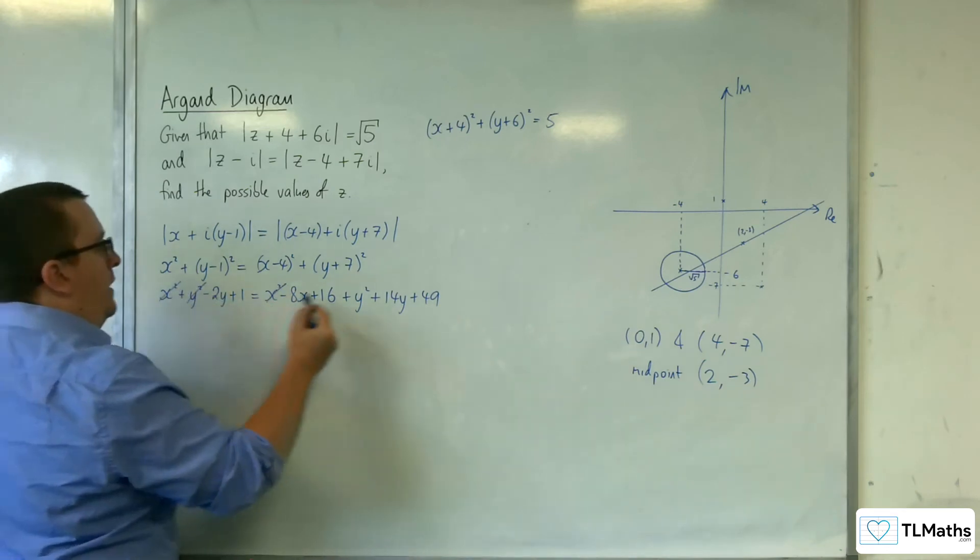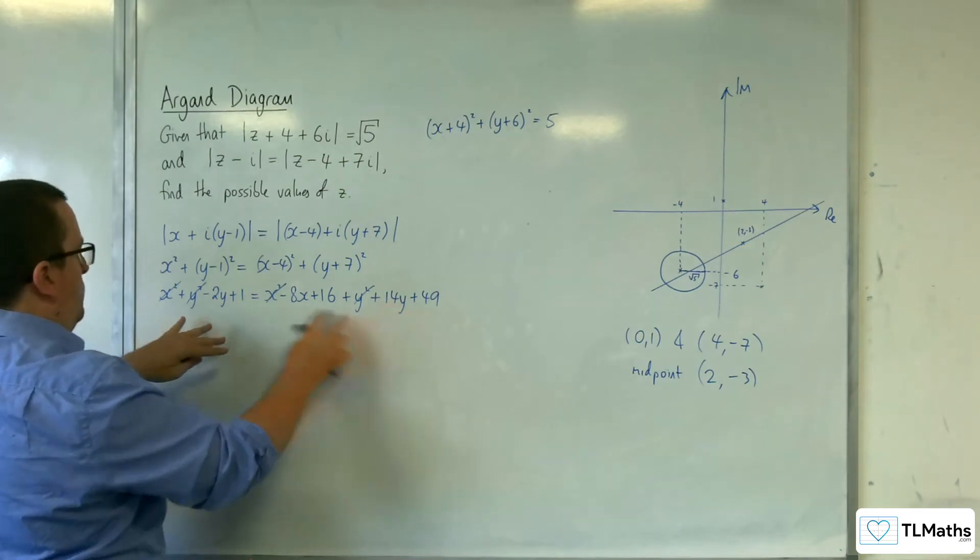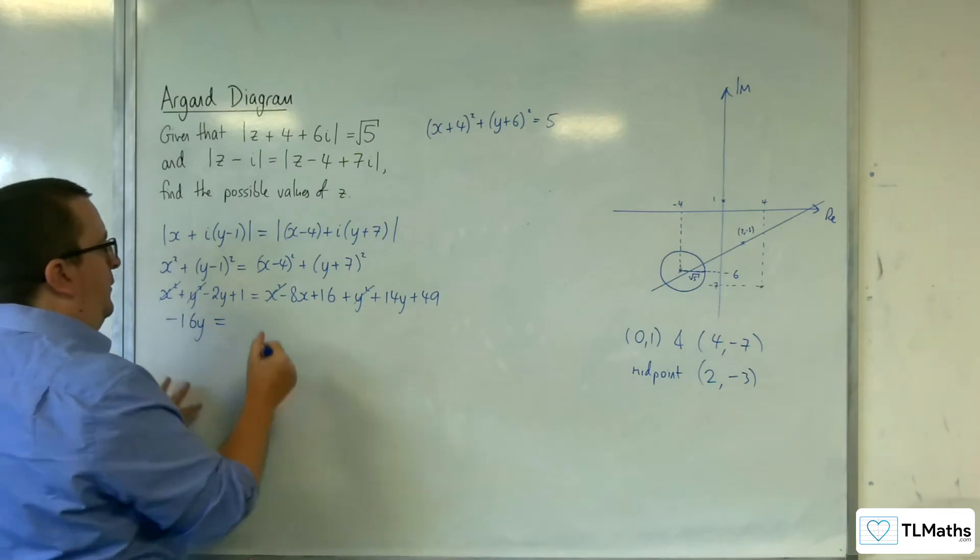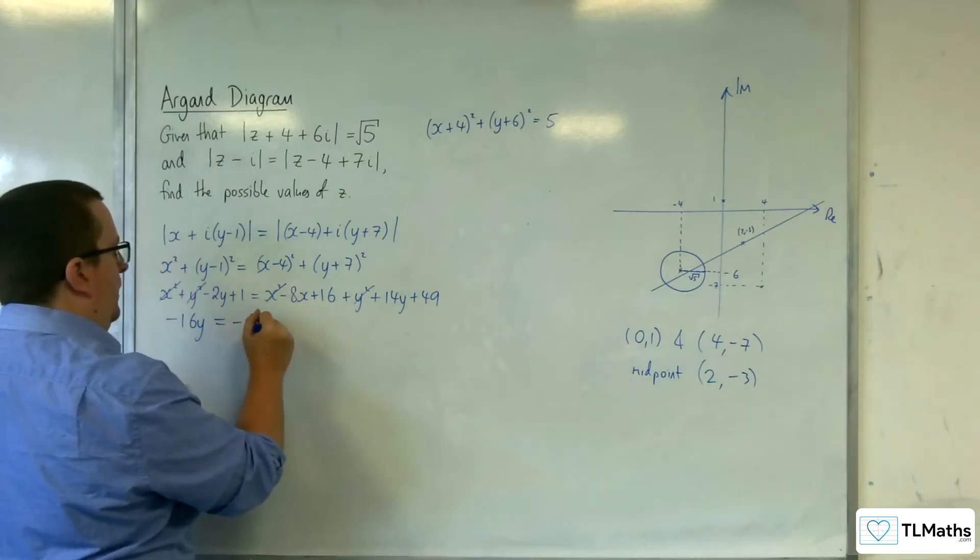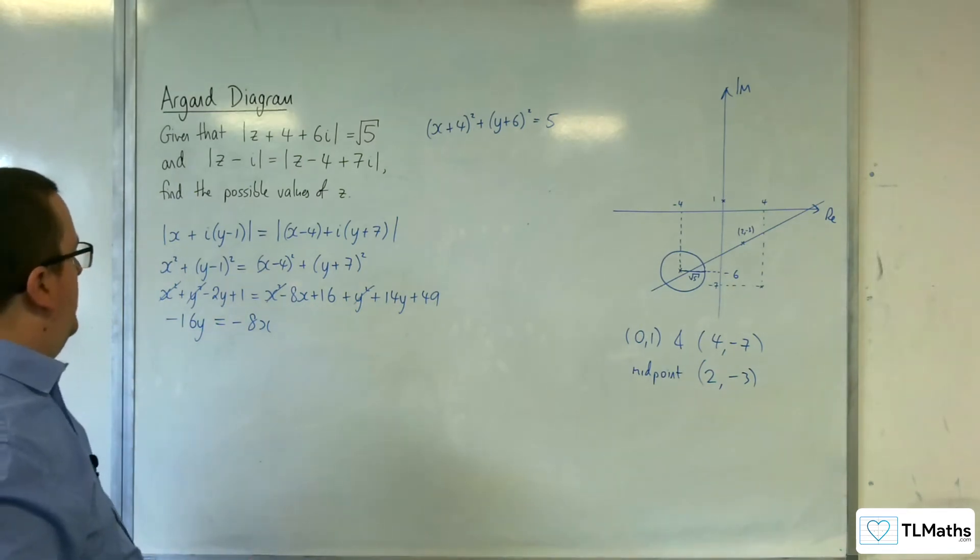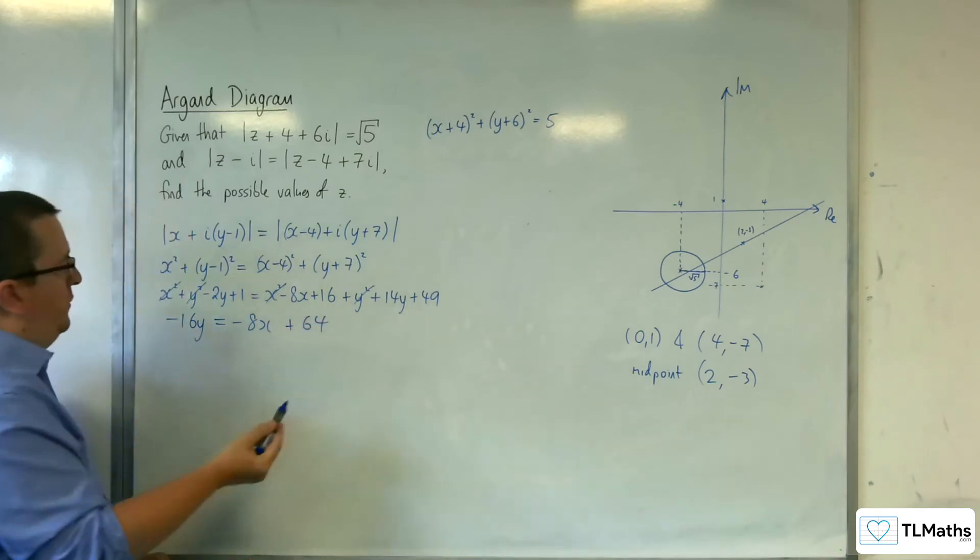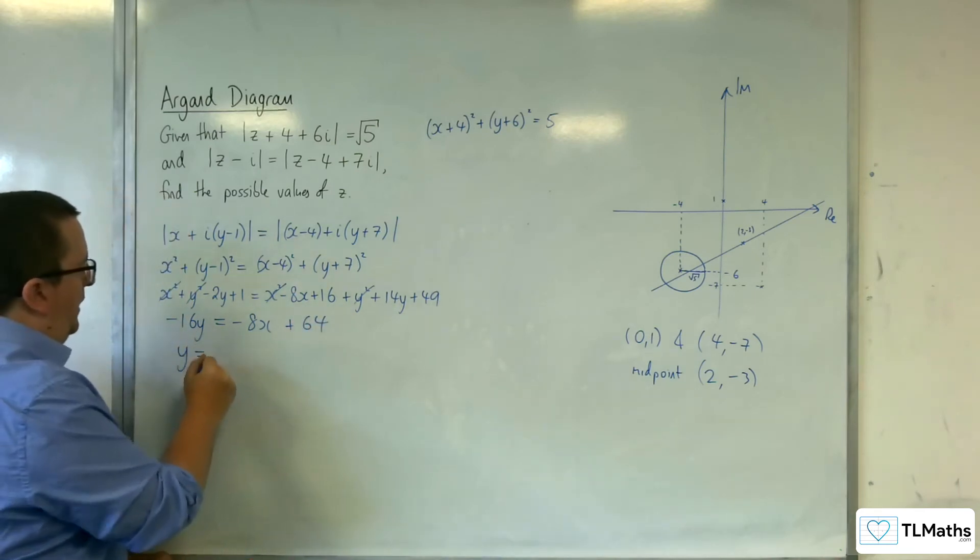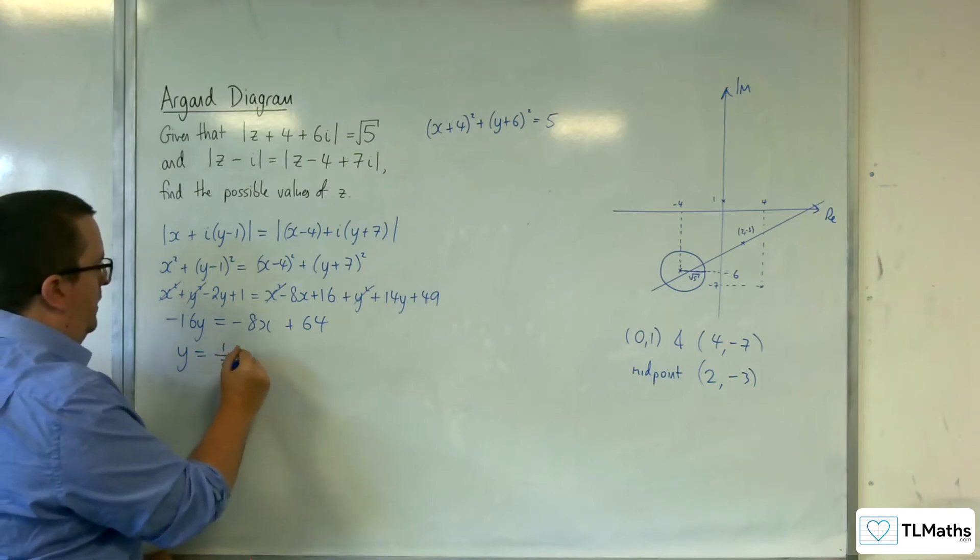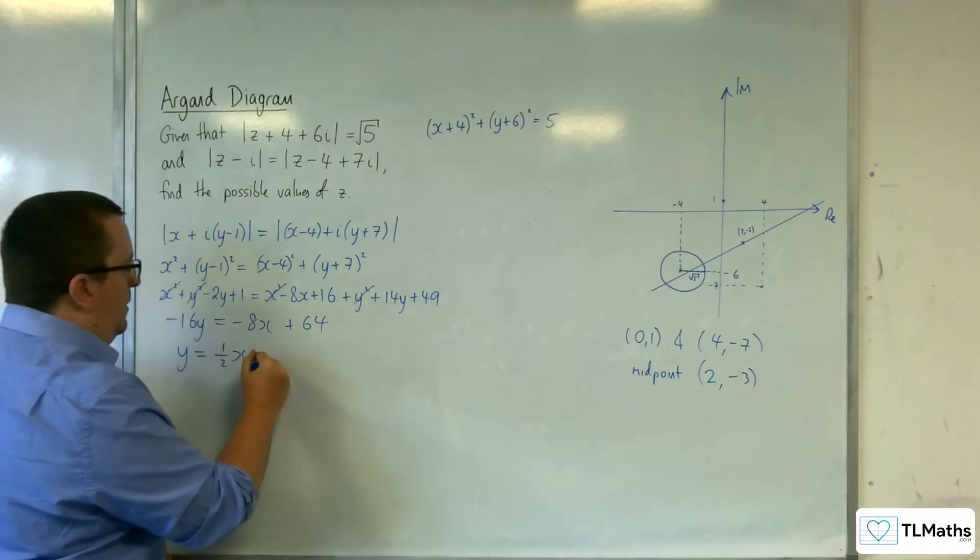So the x squareds can go. The y squareds can go. Let's get the y's on the left hand side. So we've got 14y, so minus 16y, and everything else on to the right hand side. So we've got the minus 8x. We've got 16 and 49, so that's 65. Take away 1, so 64. Divide through by the minus 16. So y is equal to minus 8 divided by minus 16 is a half x. And then 64 divided by minus 16 is minus 4.